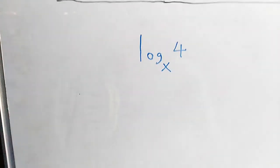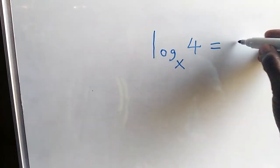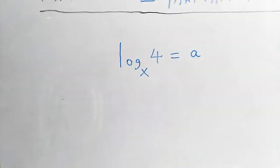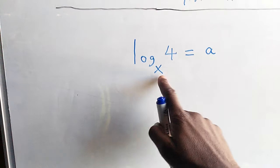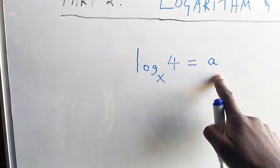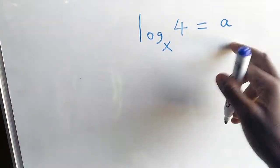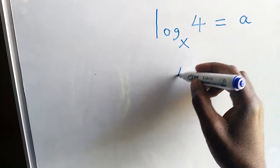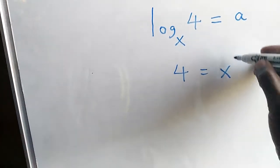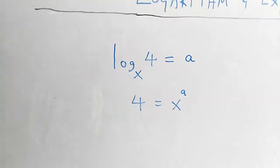This is the same as saying let's equate it to a certain value, so we say log of x of 4 is equal to a. Therefore, this would mean 4 being equal to x to the power of a.